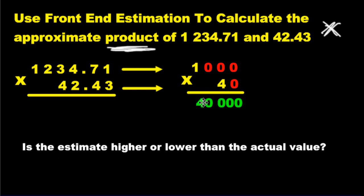Is the estimate 40,000 higher or lower than the actual value? Remember, we lowered this number. We lowered the second number. That means we've lowered the answer as well. The real answer, if you would have multiplied these, is going to be much higher than 40,000. Not much higher, but a little bit higher.